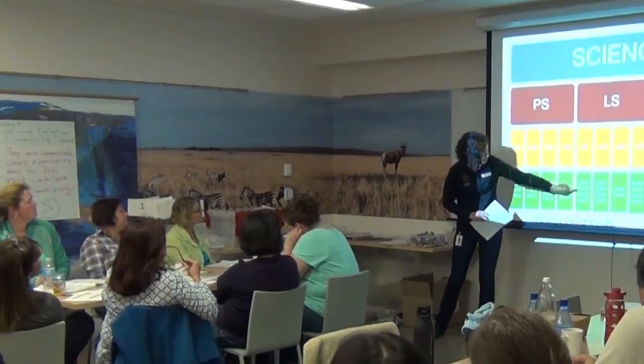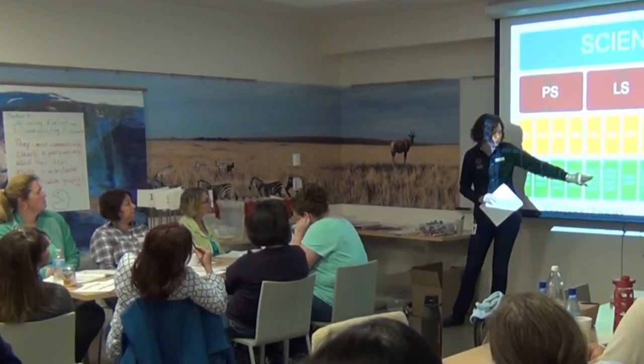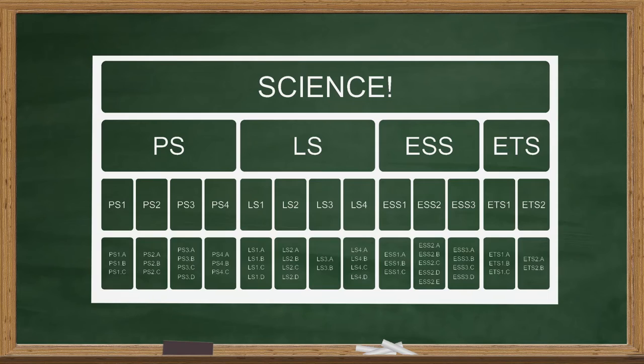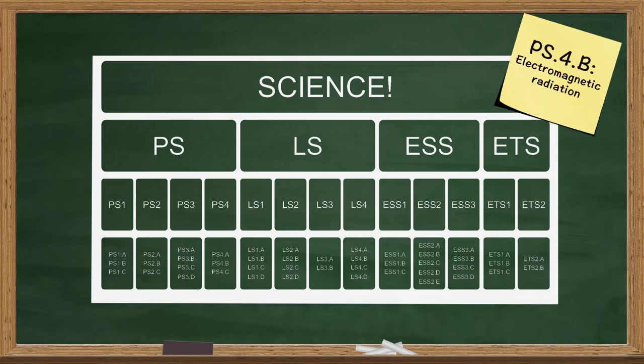Once participants have seen the component ideas, you can also point out that they now have the ability to read some of the codes used throughout the NGSS literature. For instance, PS4B is simply the physical science discipline, DCI number four, component idea B. Knowing the basics of these codes will help them when they're trying to read the performance expectation tables later on.